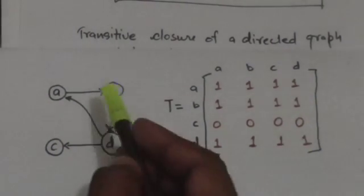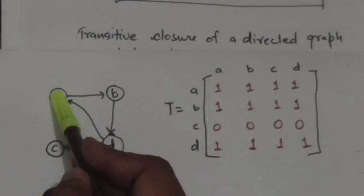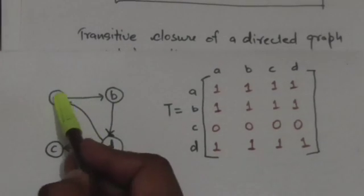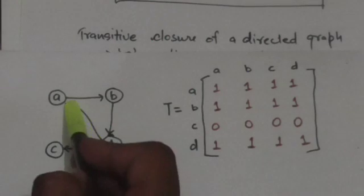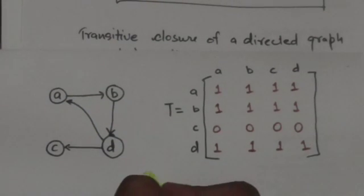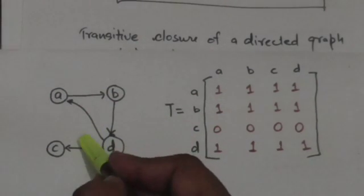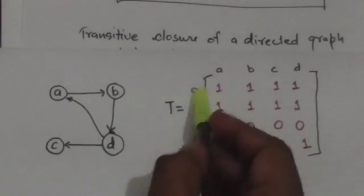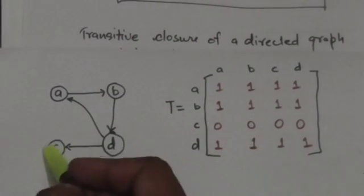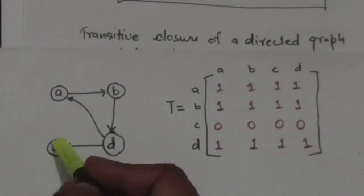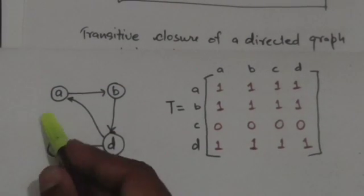In this directed graph there is a path from vertex A to vertex A, therefore in matrix T, which is the transitive closure of this directed graph, the element at the ath row and ath column is 1.